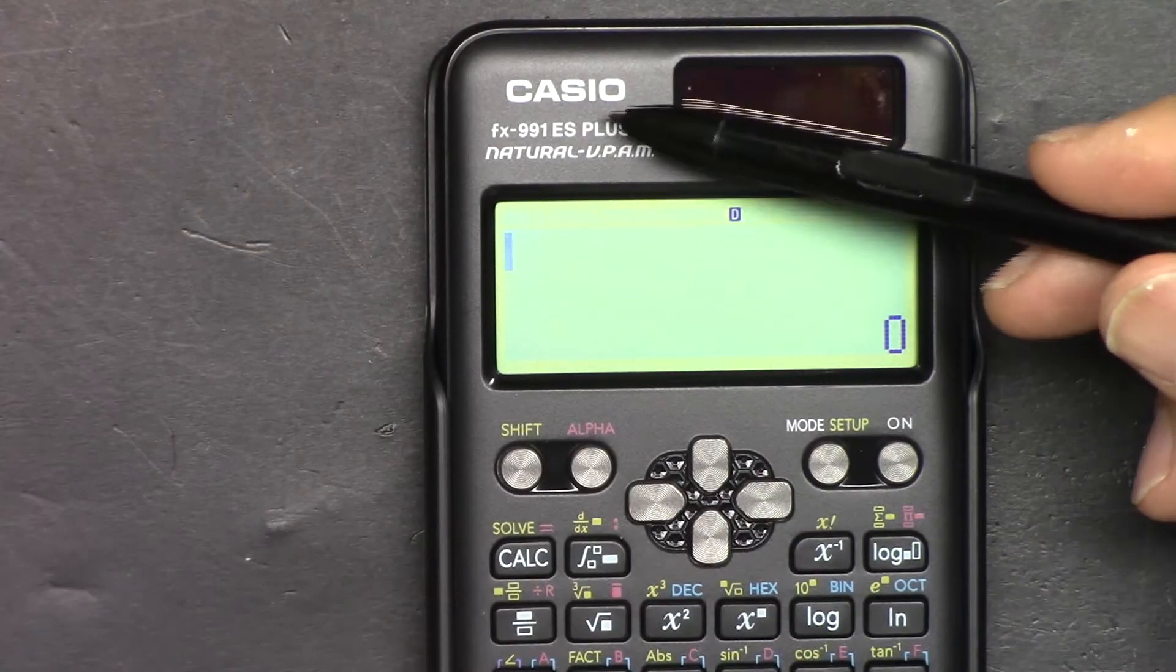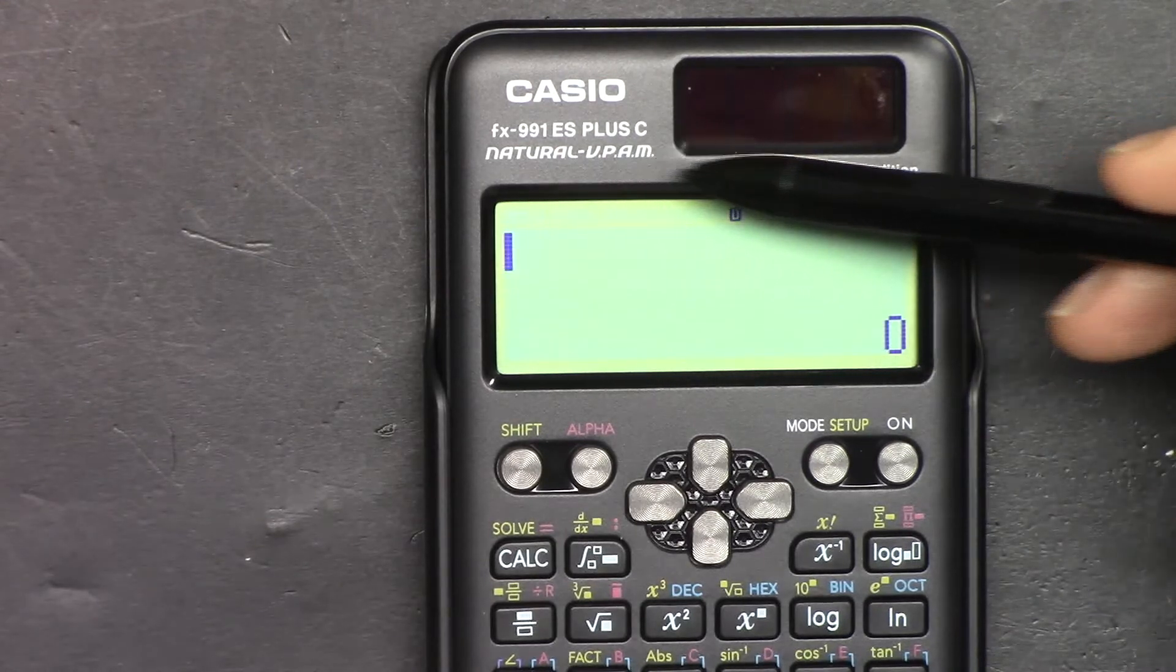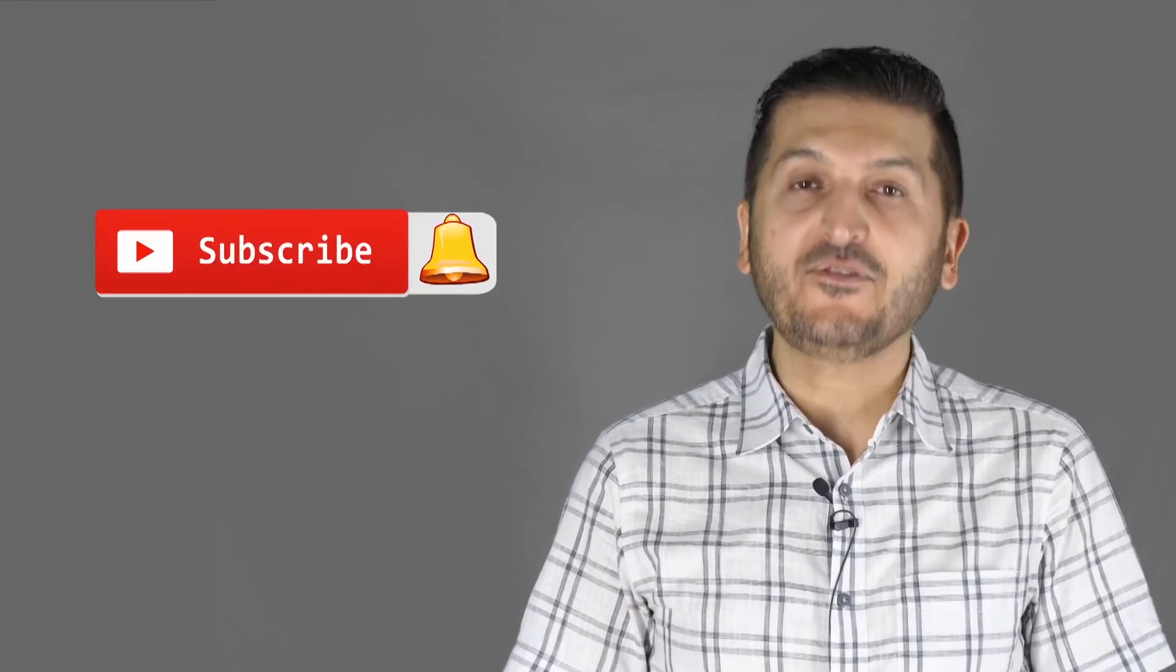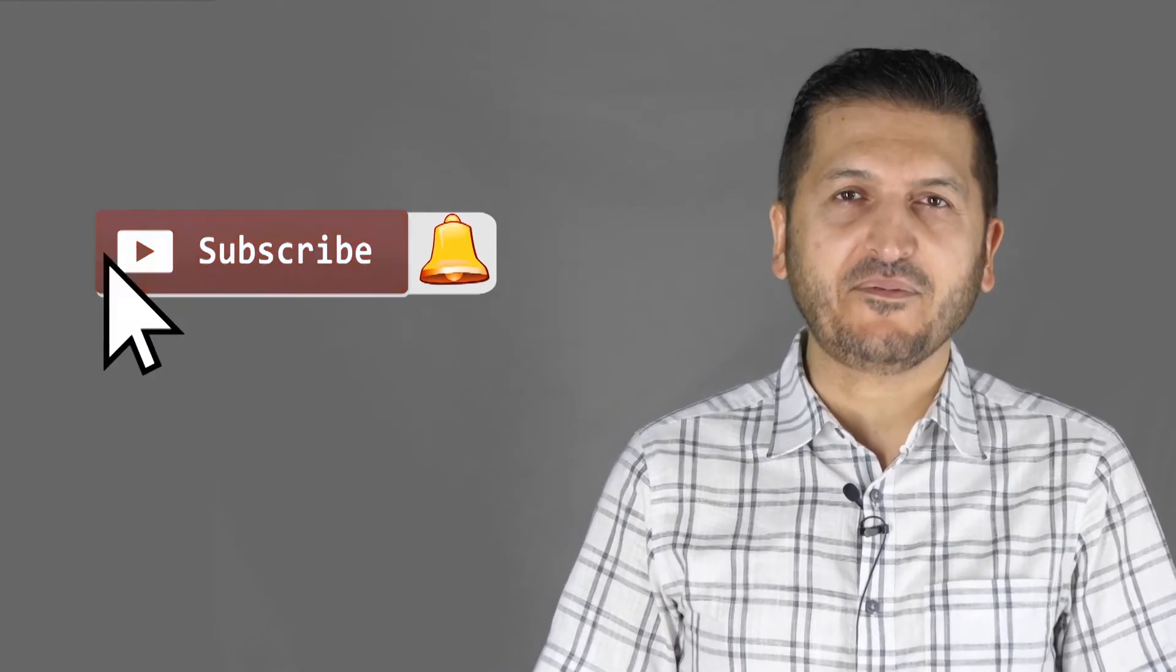Thank you for watching. This was how to use this Casio FX-991ES Plus second edition scientific calculator. If you learned something and found this useful, please thumbs up, as this will help my video in the search algorithm of YouTube. If you have comments or questions, please post them in the comment section below. I try to answer and reply. And don't forget to subscribe so you get updates on my upcoming videos.